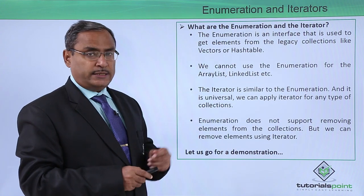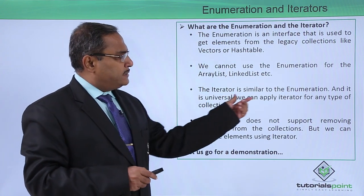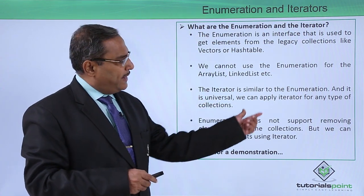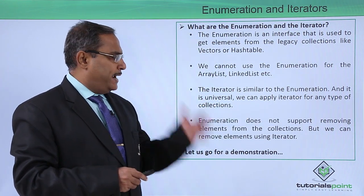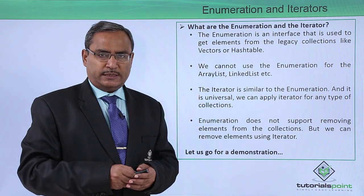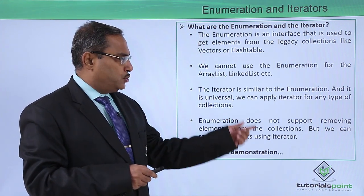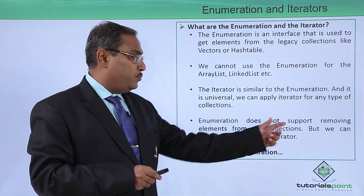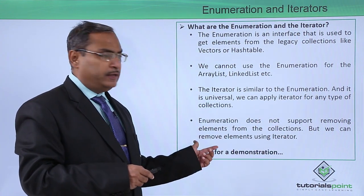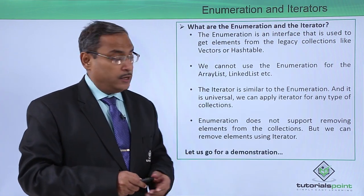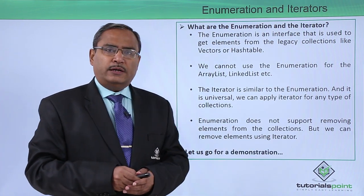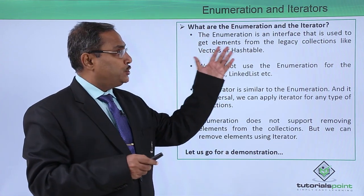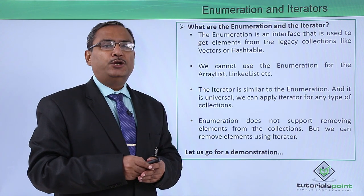What about iterators? The iterator is similar to enumeration and it is universal, meaning we can apply the iterator for any type of collection objects. Enumeration does not support removing elements from collections, but on the other hand we can remove elements using the iterator. Let us go for a practical demonstration to show the differences and features of enumeration and iterators in more detail.